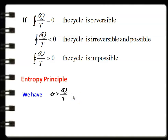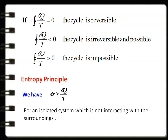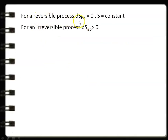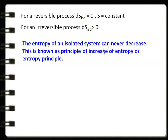Then the entropy principle. We have dS greater than or equal to δQ/T, as defined from the Clausius theorem. For an isolated system which is not interacting with the surroundings, dS of the isolated system is greater than or equal to zero. The entropy of an isolated system can never decrease. This is known as the principle of increase of entropy, or the entropy principle.